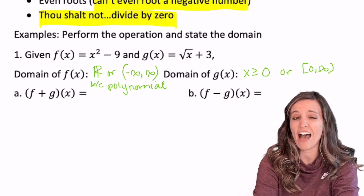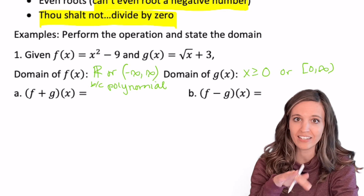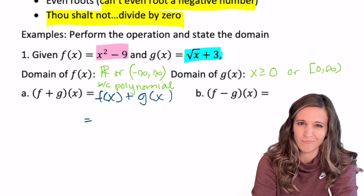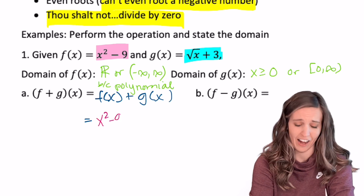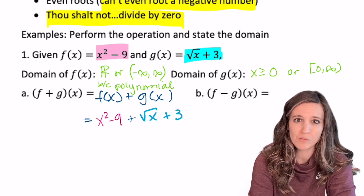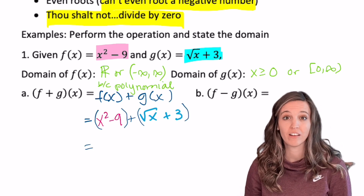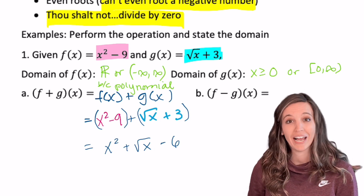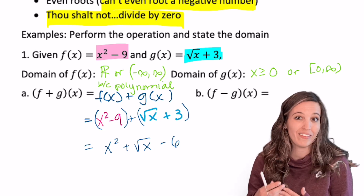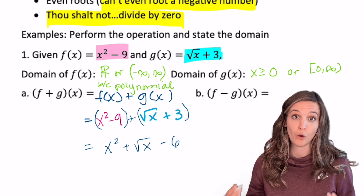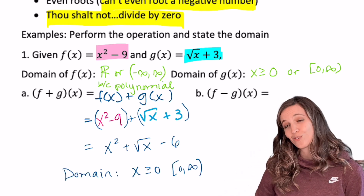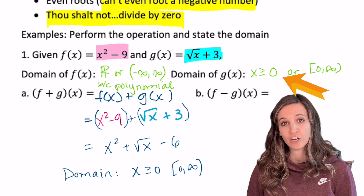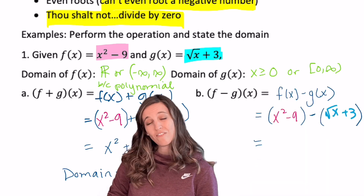For part a, f plus g of x means f of x plus g of x — adding the two functions together gives x squared minus 9 plus square root of x plus 3. Combining like terms, f plus g of x simplifies to x squared plus the square root of x minus 6. The domain is x greater than or equal to zero — the most restricted domain of our two functions.